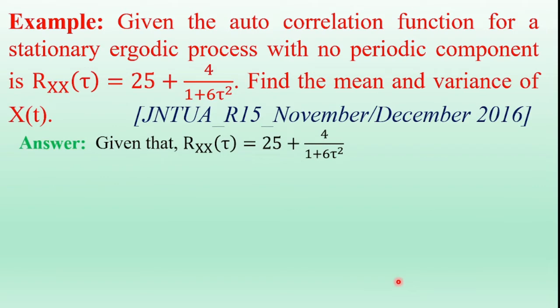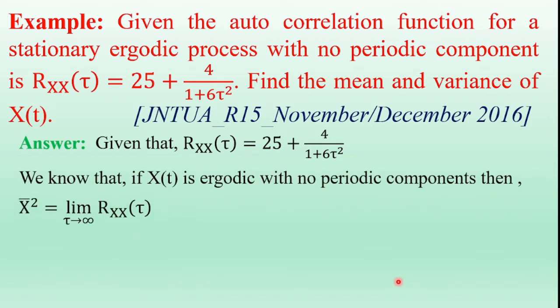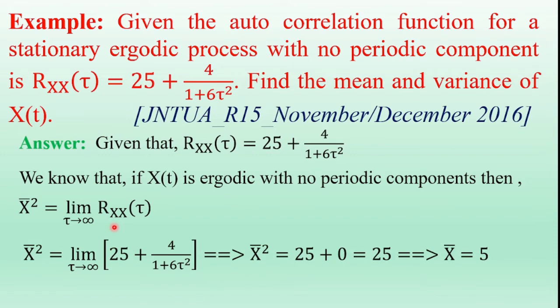Coming to the solution: given Rxx(τ) = 25 + 4/(1 + 6τ²). First, find the mean value of x(t) using autocorrelation function properties. Since x(t) has no periodic component, E[x(t)]² = limit as τ→∞ of Rxx(τ). Substituting the Rxx(τ) value, E[x(t)]² = limit as τ→∞ of 25 + 4/(1 + 6τ²).